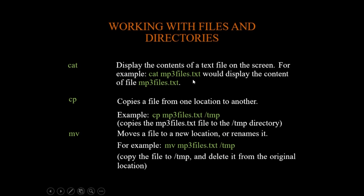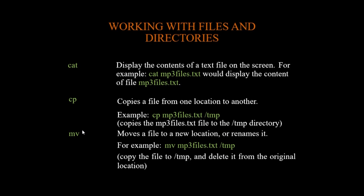The cp command is used to copy one file to another — it duplicates the file. The mv command plays two key roles: it moves files from one location to another, and it renames a file. For example, mv mp3files.txt /tmp moves the file to /tmp — it copies the file to /tmp and deletes it from the original location.